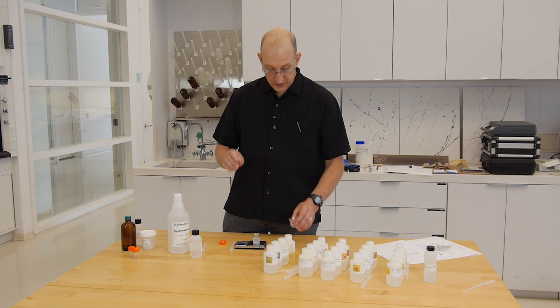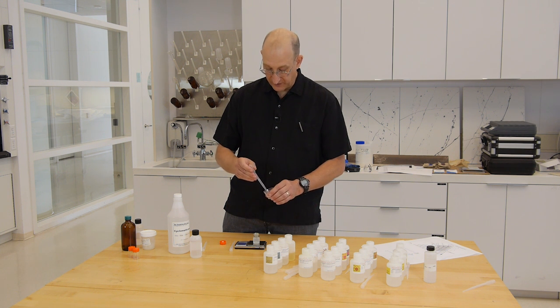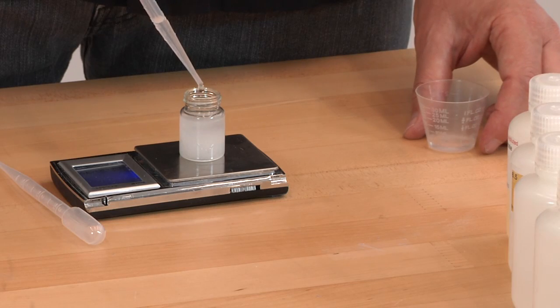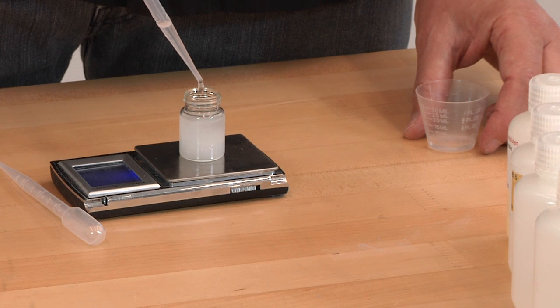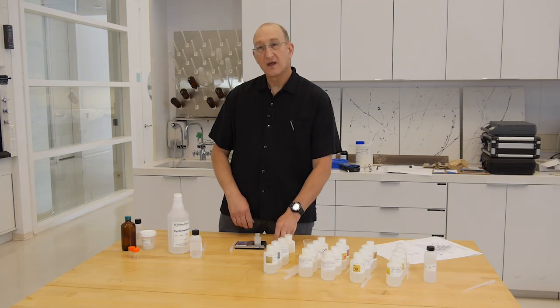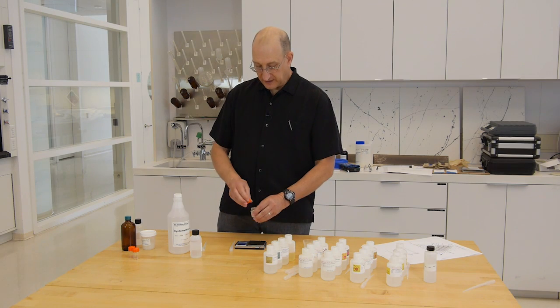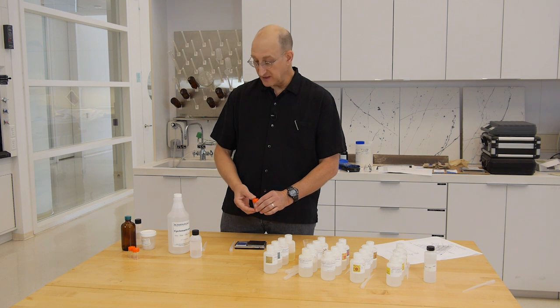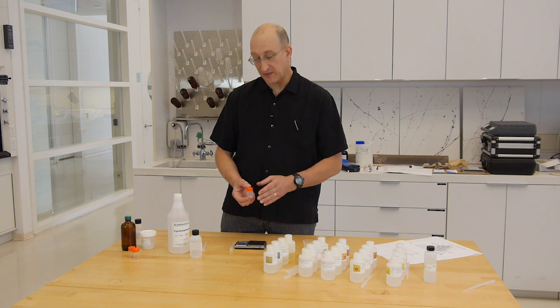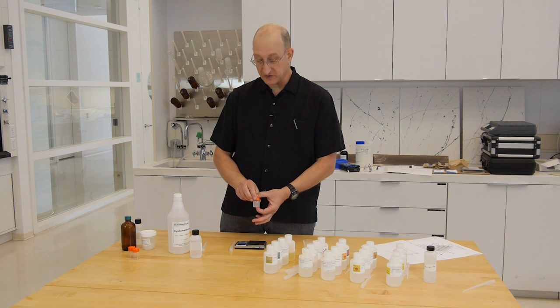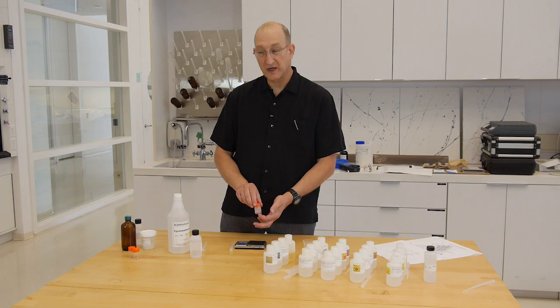Now we want to add 2.5 grams, 25%, 2.5 grams of the aqueous phase. Because this is a microemulsion, the energy of the aqueous phase and the energy of the cyclomethicone have been balanced by the choice of surfactant. So it takes very little agitation to make the microemulsion. So here we have our microemulsion.